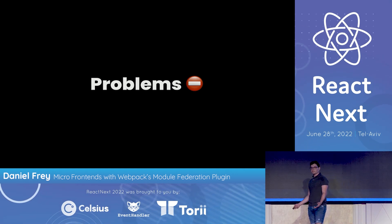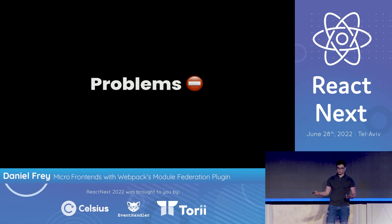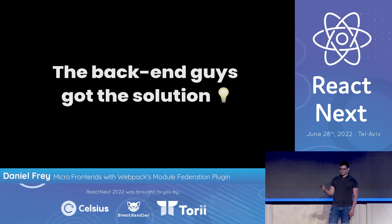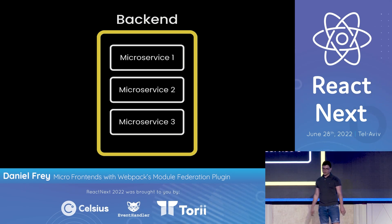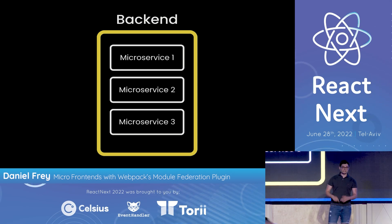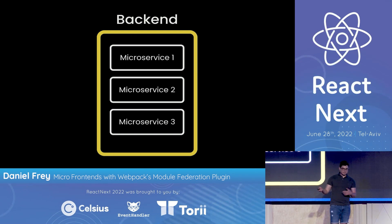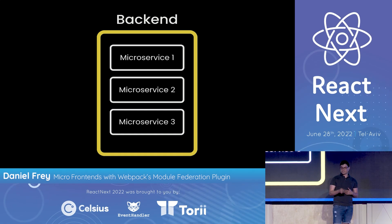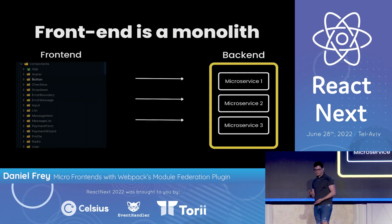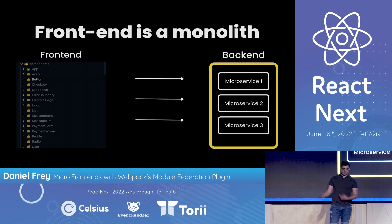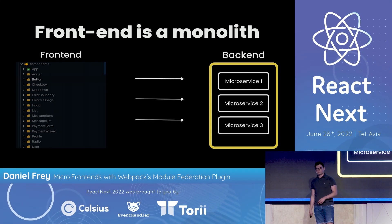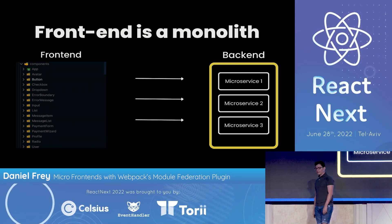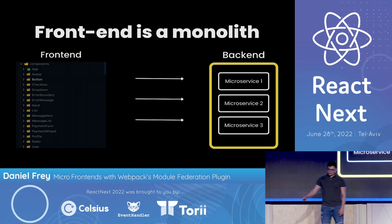The backend folks already have a solution. Most companies right now have microservices architecture in the backend — each microservice is split into a specific business case and serves the frontend. However, on the frontend, as we just saw, it's still a monolith. What if we could take some of the principles that microservices have used for years and apply them to the frontend?